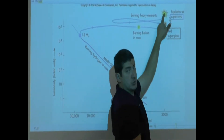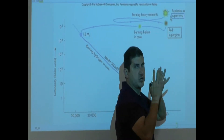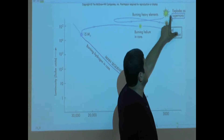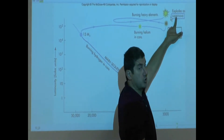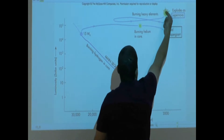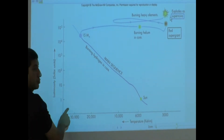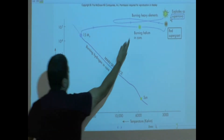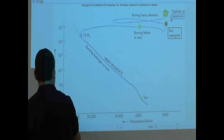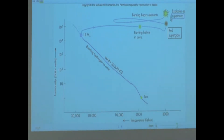Over here is a similar event to a planetary nebula, but much, much, much more violent — a supernova explosion. And then the core of the star goes over here and ends up as a neutron star. So we draw a line here and end up over there.